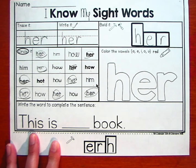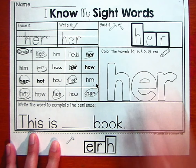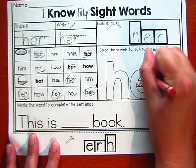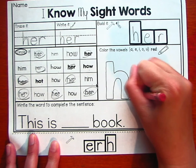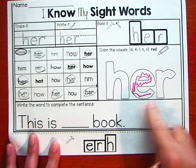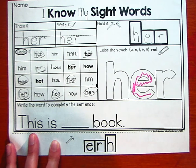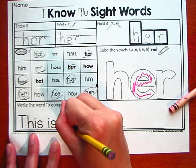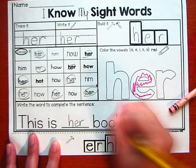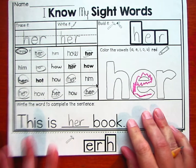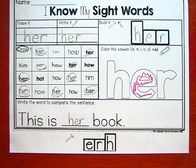All right, let's color in the vowels. H-E is our vowel. R. Her. This is her. H-E-R. Her book. Wonderful. Thank you. And we'll see you tomorrow.